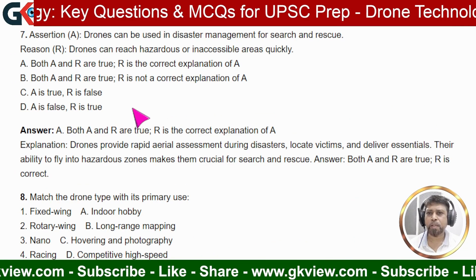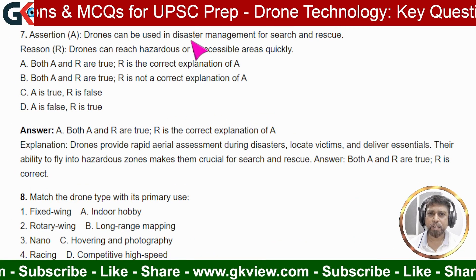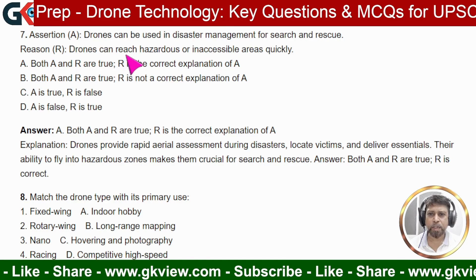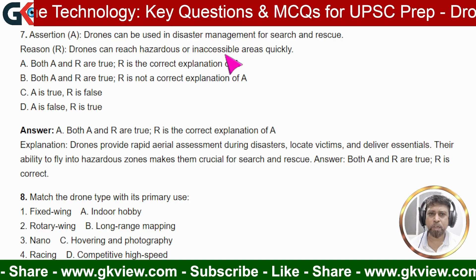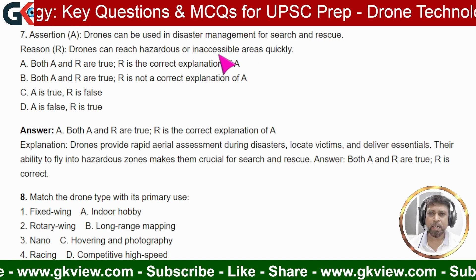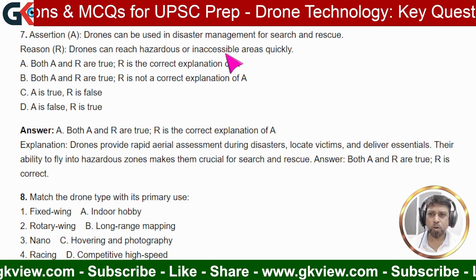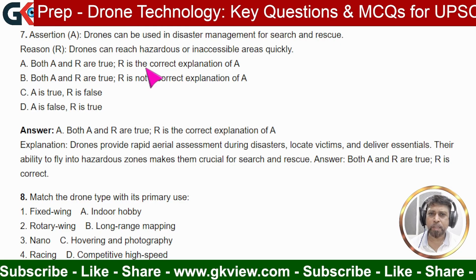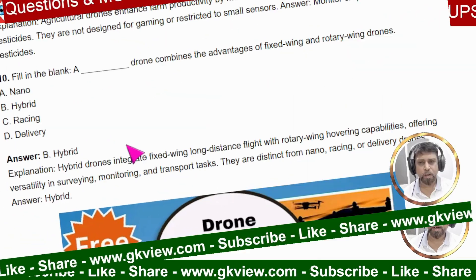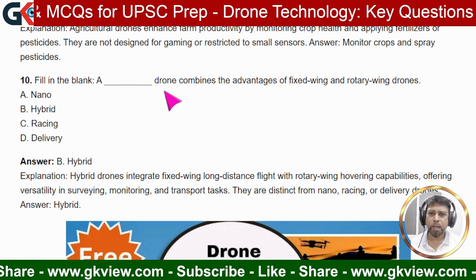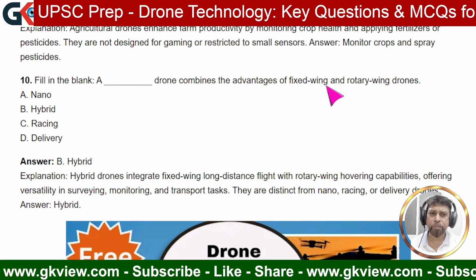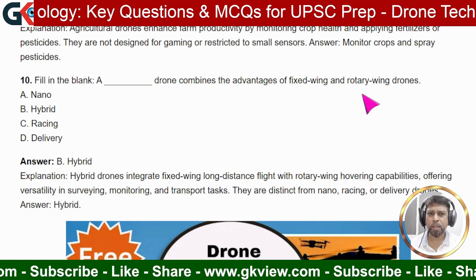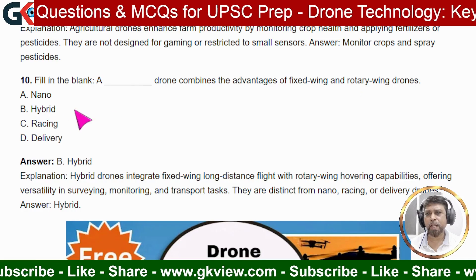Q8 (Assertion-Reason): Assertion — drones can be used in disaster management for search and rescue (correct). Reason — drones can reach hazardous or inaccessible areas quickly (correct). Answer: A — both assertion and reason are true, and R is the correct explanation of A. Q9 (Fill in the blank): A drone that combines the advantages of fixed-wing and rotary-wing drones is called a hybrid drone, because both types of wings are present in the same drone.